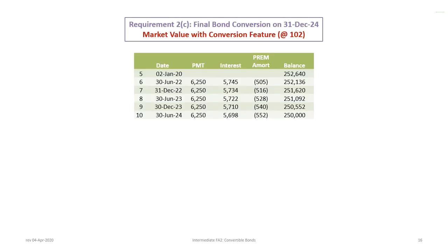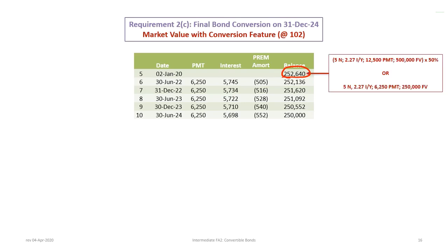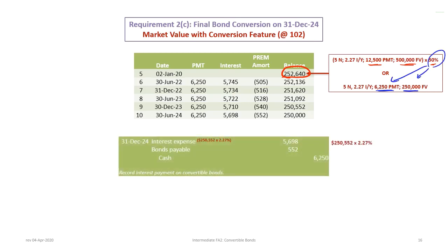Now we proceed with the final conversion. After the conversion, $252,640 remains to amortize over five periods — this is the revised amortization table. To record the final conversion at December 31st, 2024, we first update interest: debit bond interest expense $5,698, credit cash $6,250, and debit bond payable $552 for the last amortization of the premium. This brings interest up to date prior to the conversion.